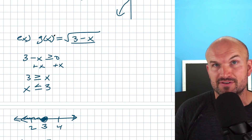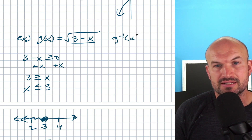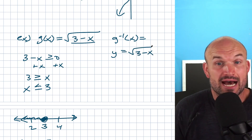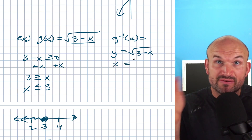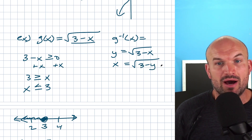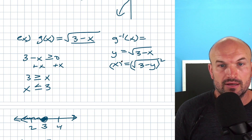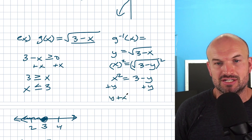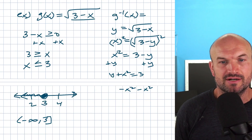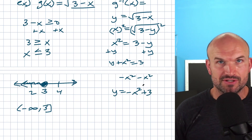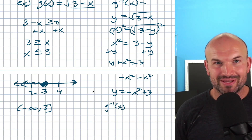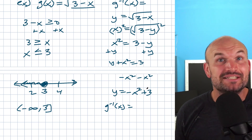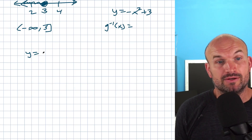To find the range, we need the domain of the inverse. So we find g⁻¹(x): replace g(x) with y, getting y = √(3 − x), then swap variables to get x = √(3 − y). Now solve for y: square both sides to get x² = 3 − y, then add y to both sides giving y + x² = 3, then subtract x² to get y = −x² + 3. Most students stop here and say that's the inverse — but if you know what this graph looks like, there's an issue. We need to apply some restrictions.